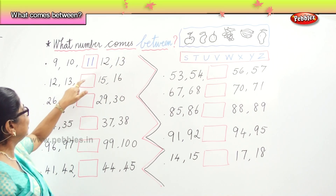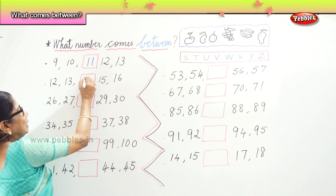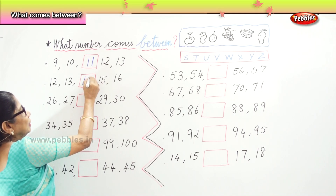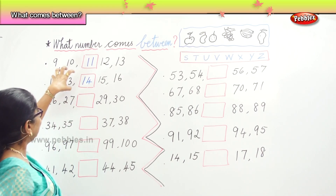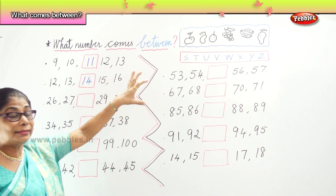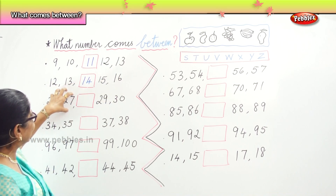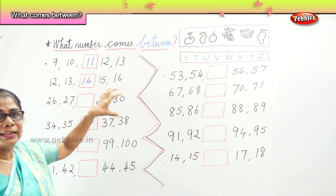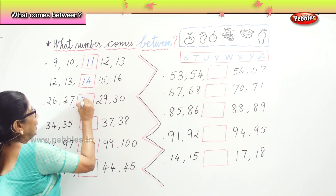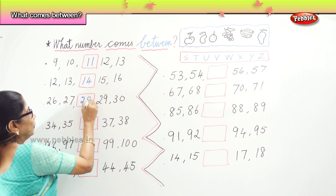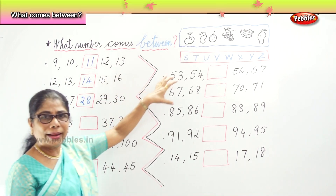Next: 12, 13, __, 15, 16. What's the number? 14. So: 12, 13, 14, 15, 16. The next row: 26, 27, __, 29, 30. Very good — 28. Numbers in order: 26, 27, 28, 29, 30.